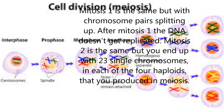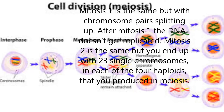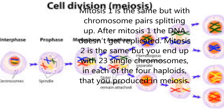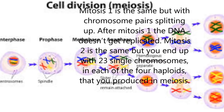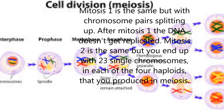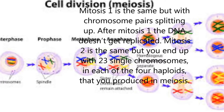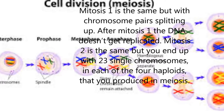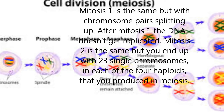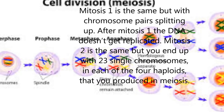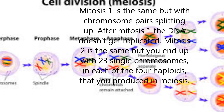Meiosis 1 is the same but with chromosome pairs splitting up. After meiosis 1, the DNA doesn't get replicated. Meiosis 2 is the same but you end up with 23 single chromosomes in each of the four cells produced in meiosis.